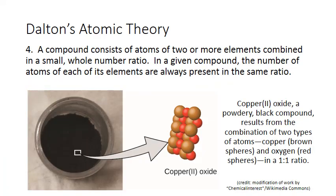The fourth postulate of Dalton's theory is that a compound consists of atoms of two or more elements combined in a small whole number ratio. In a given compound, the number of atoms of each of its elements are always present in the same ratio. So consider the compound copper oxide. This is a powdery black substance made up of the elements copper and oxygen. When broken down into those elements, it's found that they are always present in the same ratio. In terms of atoms, this is one copper atom for every one oxygen atom.